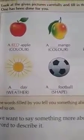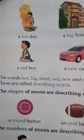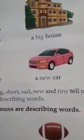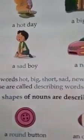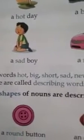Round ball, square ball — describing words for shape. A hot day, warm water. Big house — 'big' is the describing word for house. Small house — 'small' describes it. Short man — 'short' describes the man. Sad boy, happy boy — 'sad' and 'happy' are describing words. New car, old car — 'new' and 'old' are describing words. A tiny mouse — 'tiny' and 'small' are describing words.